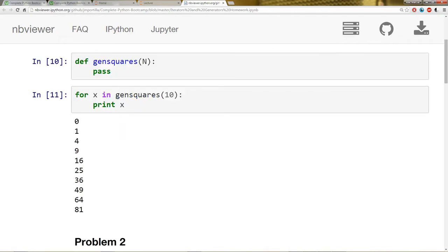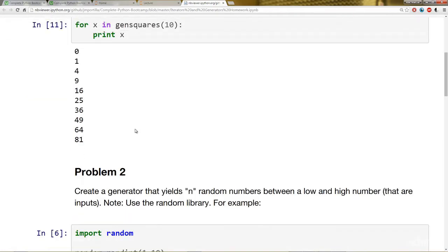So if I use it, for example, I can say for x in gen squares, print x. Okay.